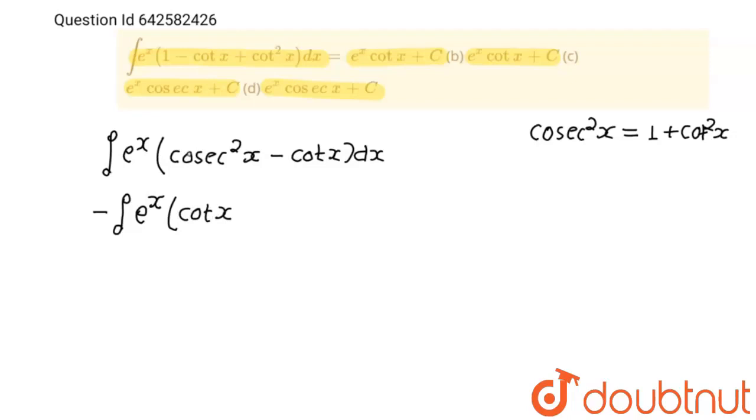And by taking minus sign from plus cosec square x, this will become minus cosec square x and this is dx.